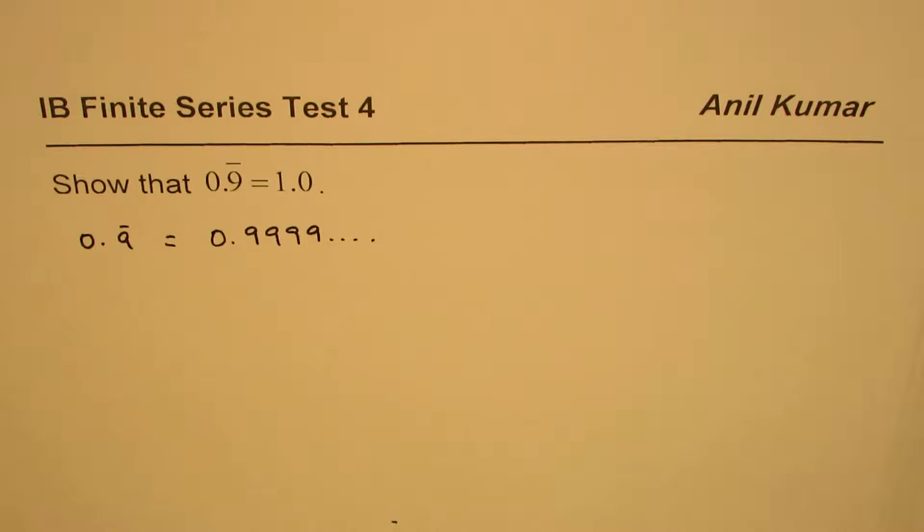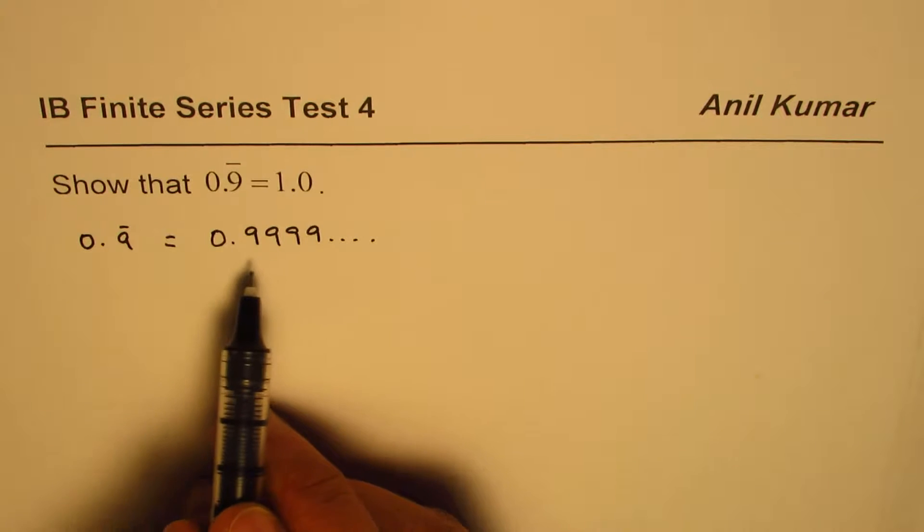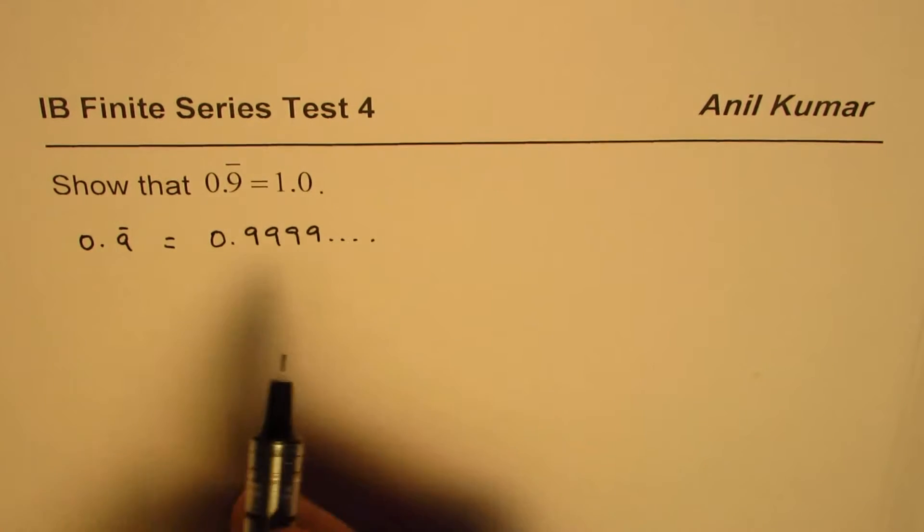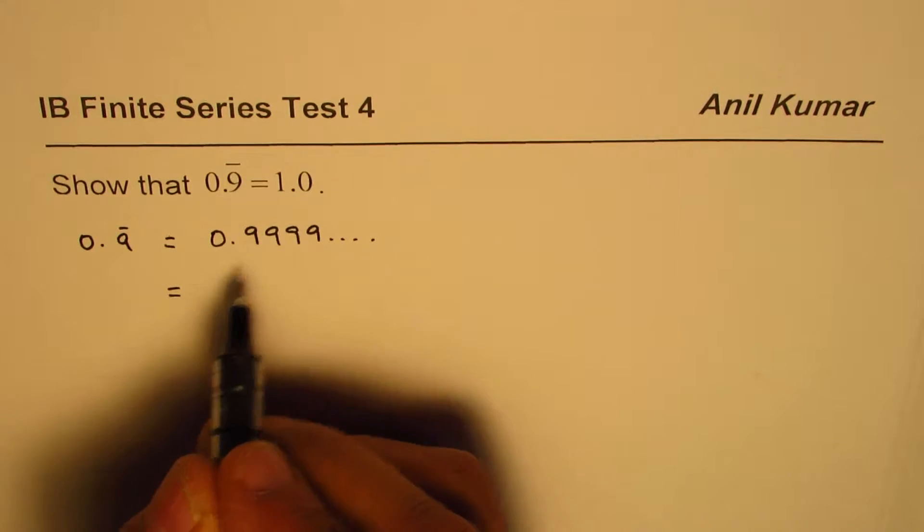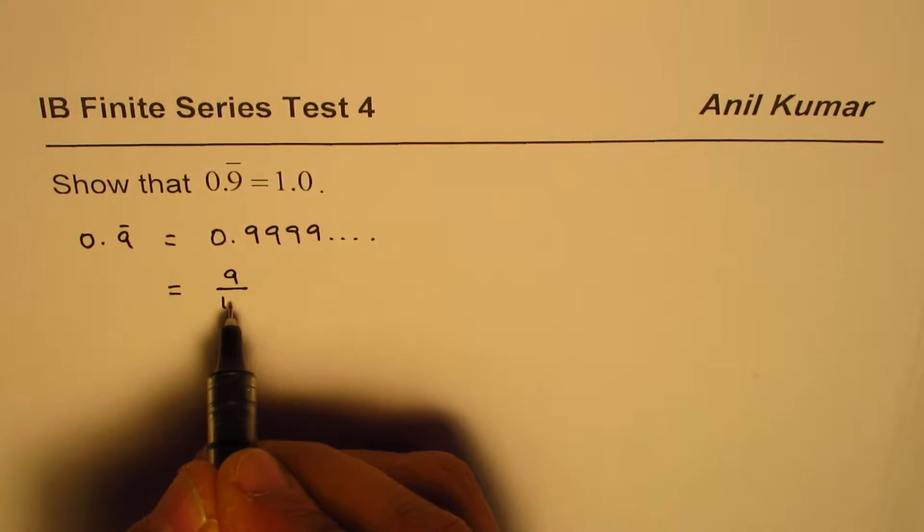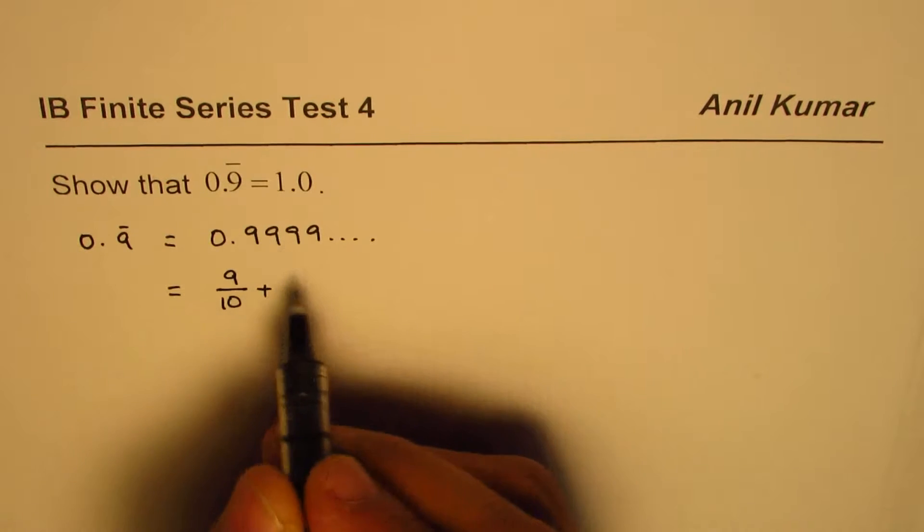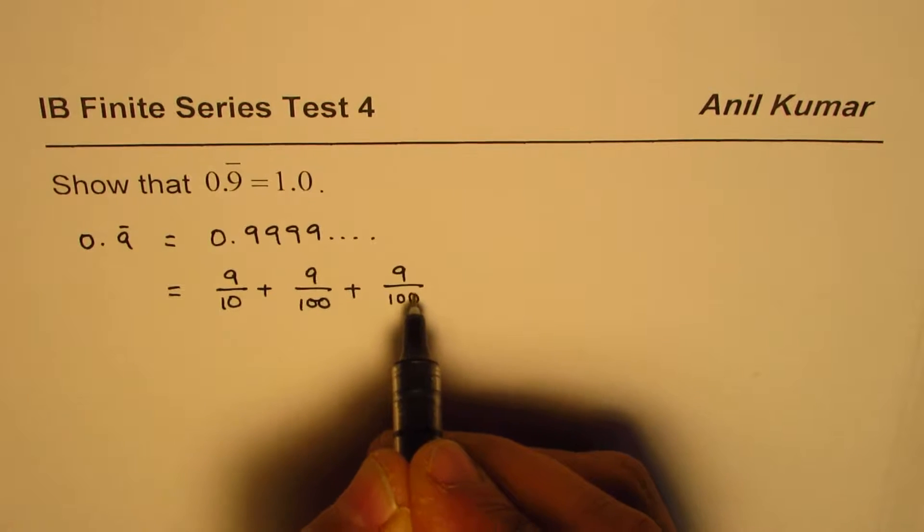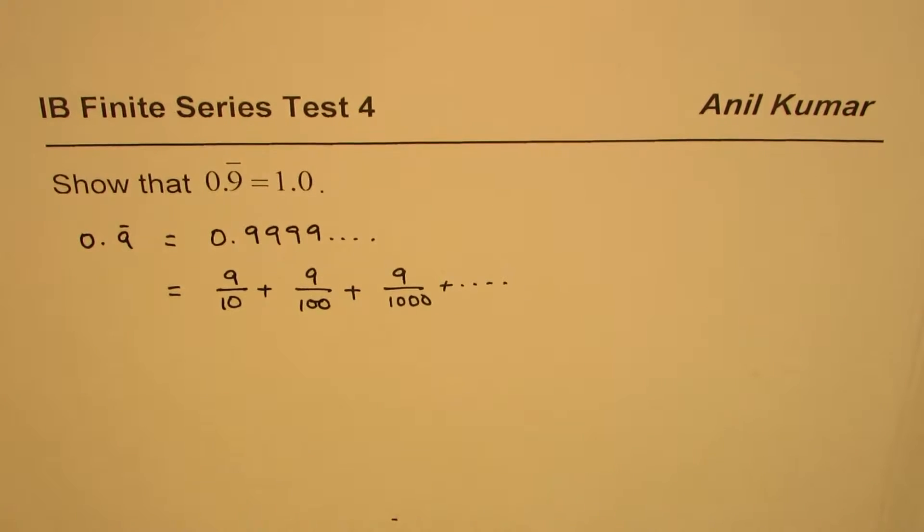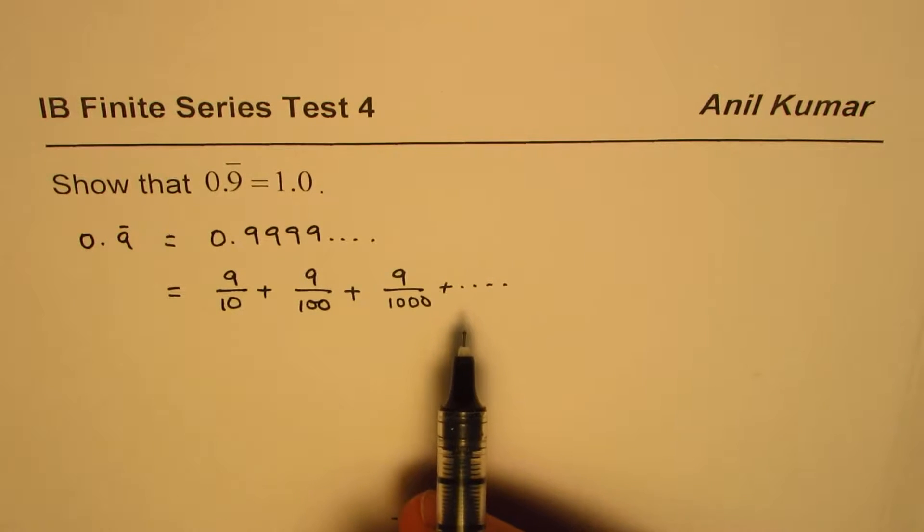Now you can actually write this decimal number in expanded form. For example, I could write this as 9/10 (point nine is 9/10) plus 0.09 which is 9/100, plus 9/1000, and so on. So you get the series.